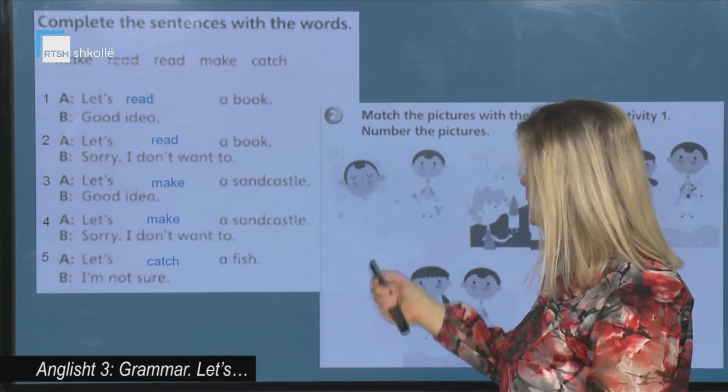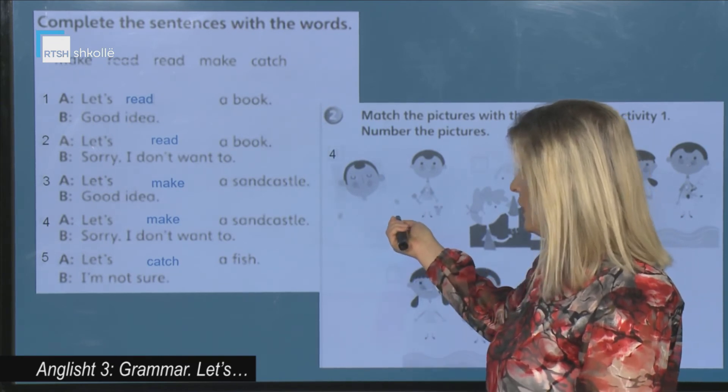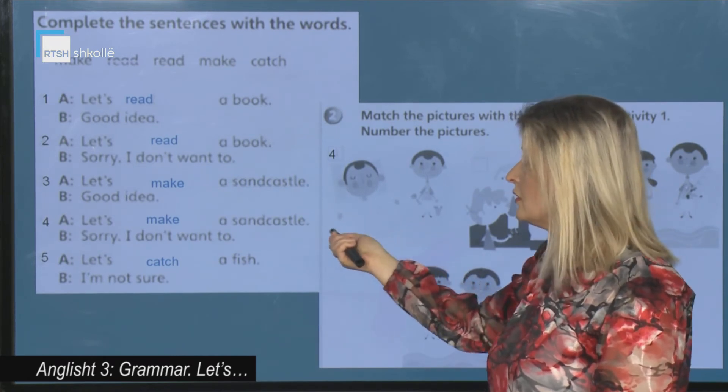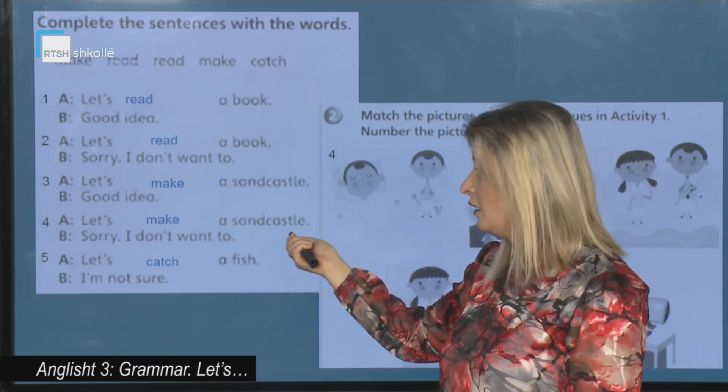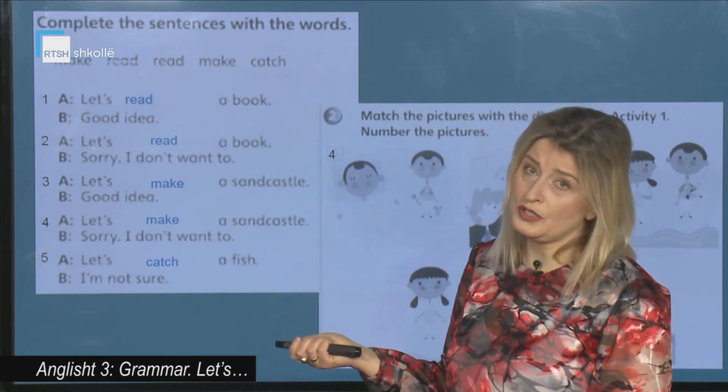Shigojmë figurën e par. Qëfar thotë figura e par. Let's make a sand castle. Dhe djali nuk dëshiron. Let's make a sand castle. Sorry I don't want to. Më vjen keqë. Por nuk dëshiroj.